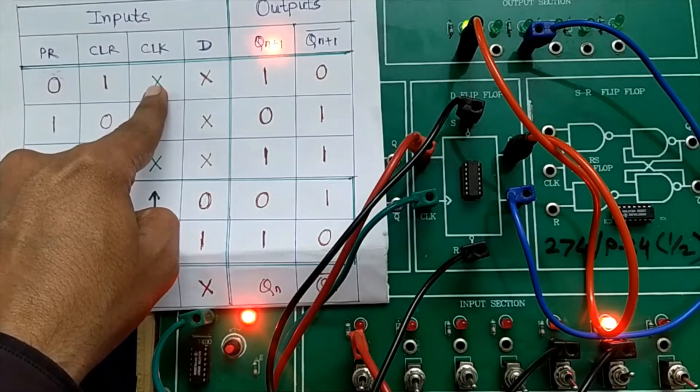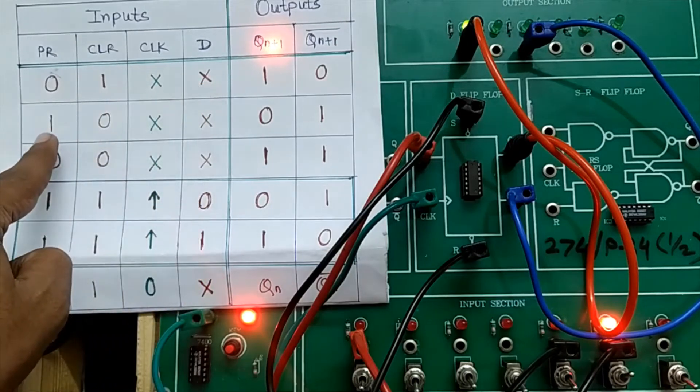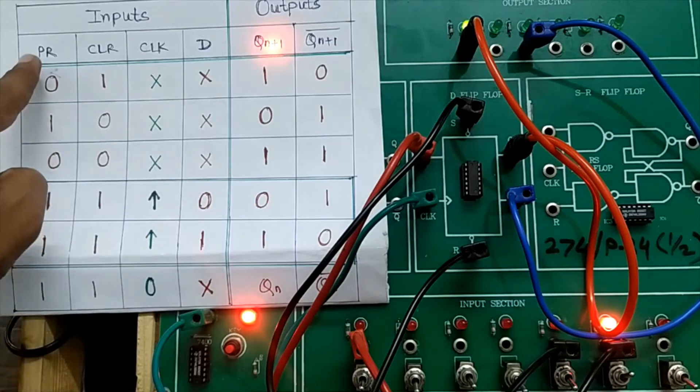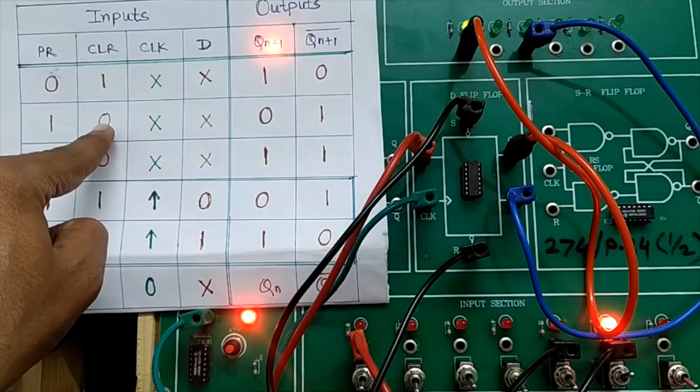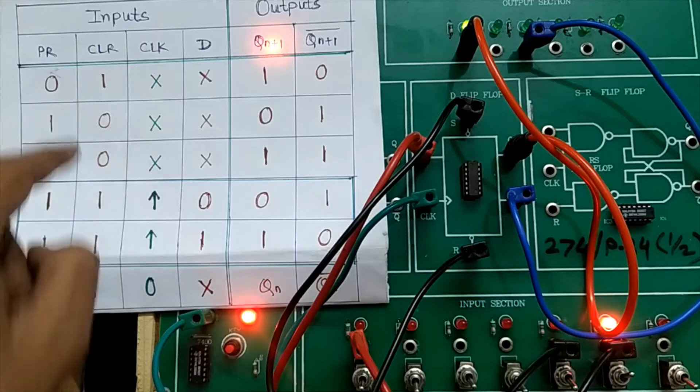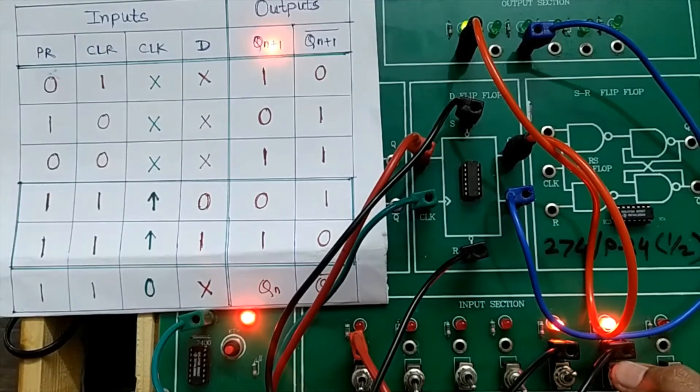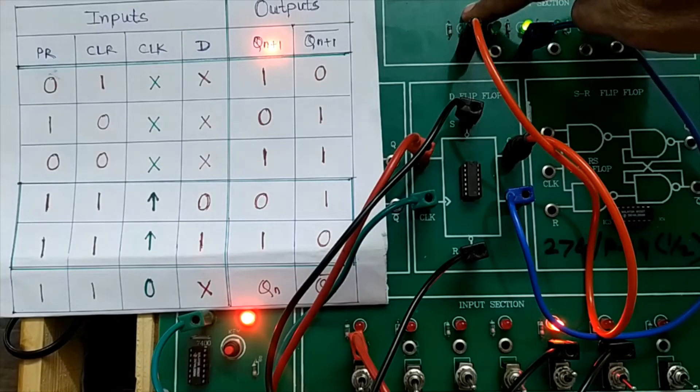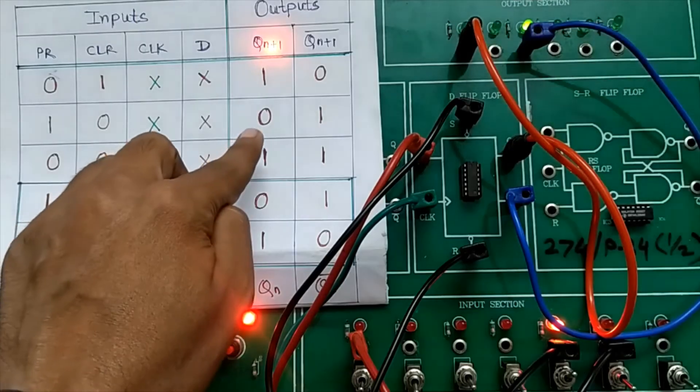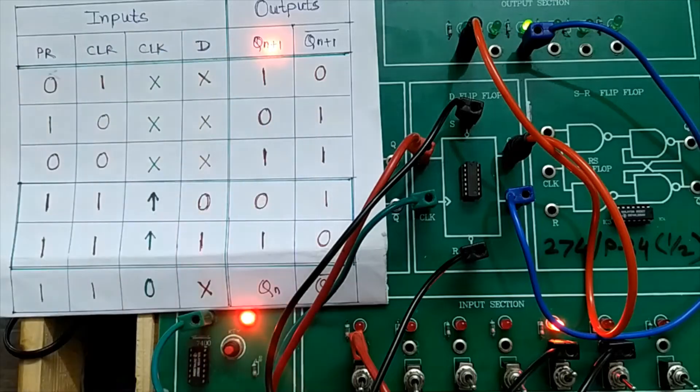Let us move to the next row where preset pin is made one and clear pin is applied with zero. It means I want to clear the flip-flop or store zero in the flip-flop. Make preset one, make clear zero. This non-inverting output has become zero because that LED has turned off. Q is zero and Q bar is one. Now the flip-flop is in clear state.